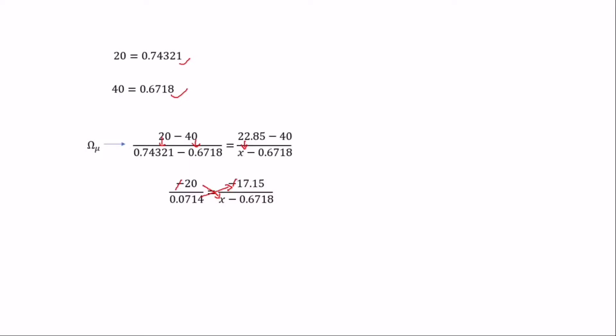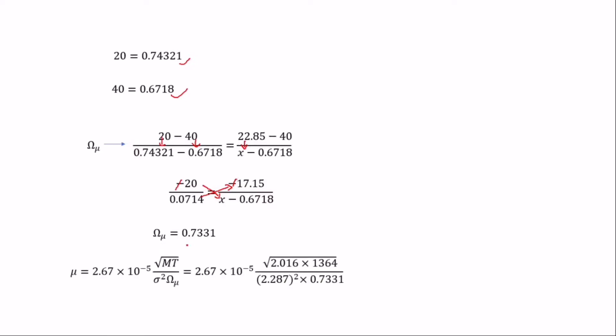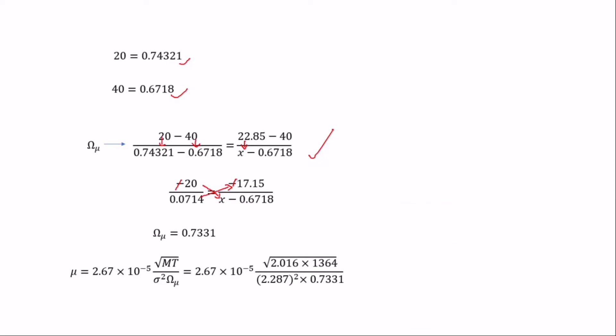After the interpolation, we find Ω equals 0.7331, which is the collision integral corresponding to our value of 22.85. This is the key unknown needed to solve for the viscosity of hydrogen gas. Note: if the collision integral argument had been directly on the table, we would simply read off the value without interpolation.